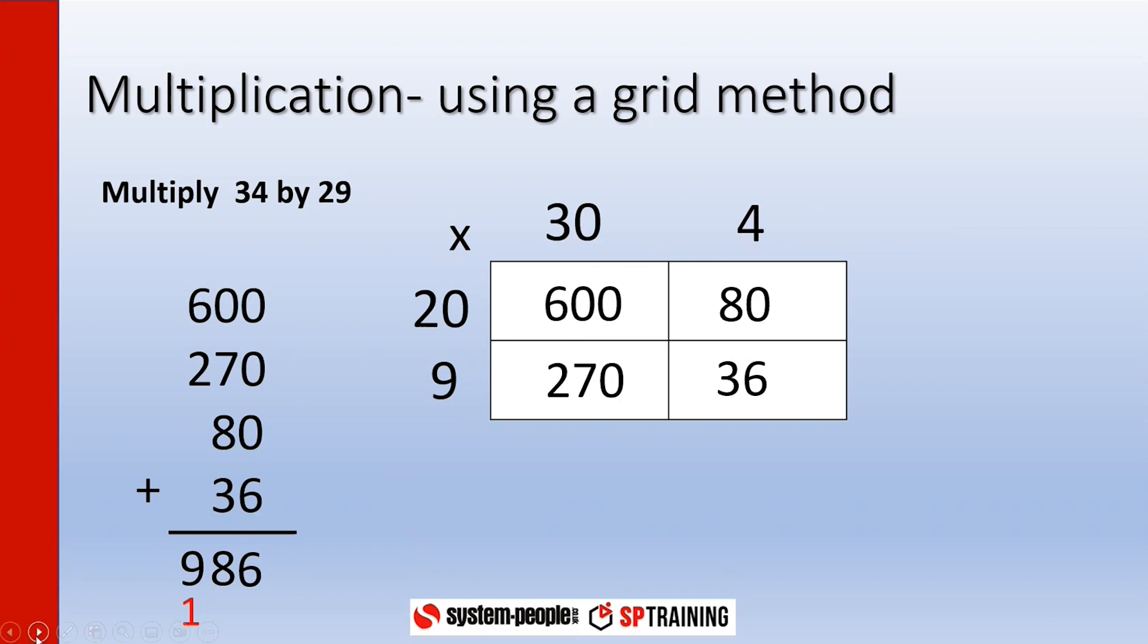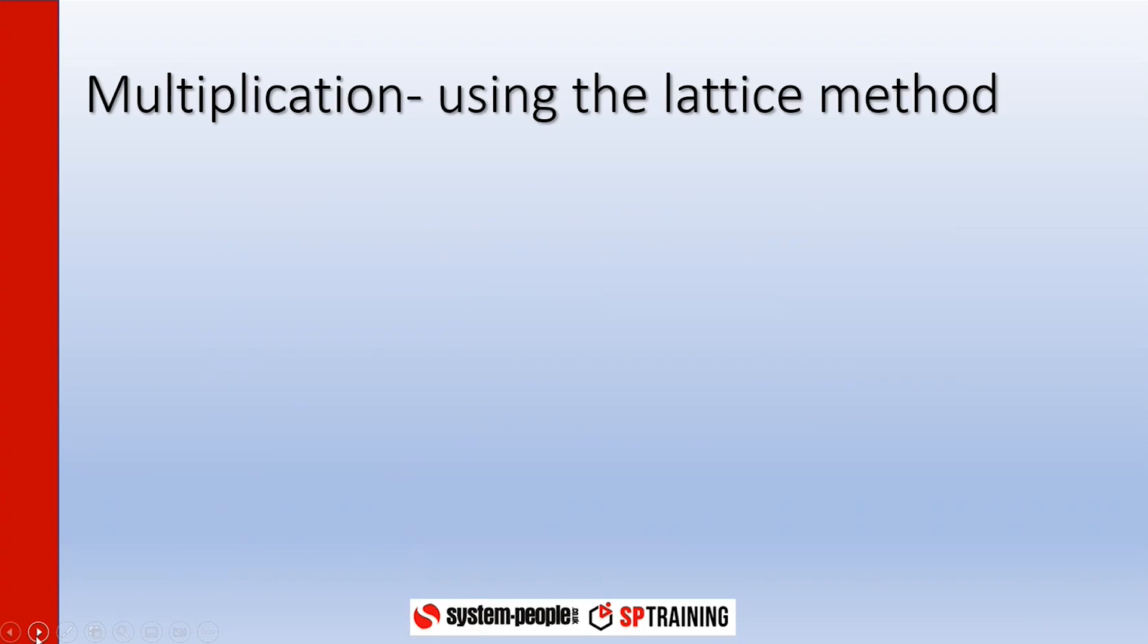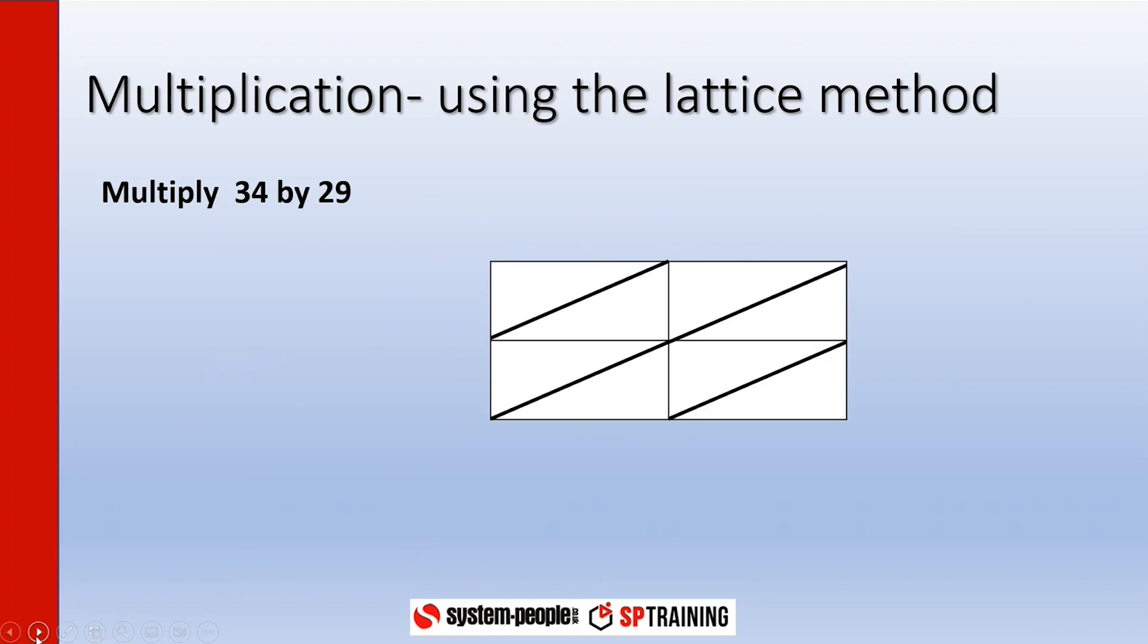Some people find that method difficult at times because you've got to deal with multiples of 10. I'm going to show you another method which is called the lattice method. And again we're going to use the same example, 34 times by 29. And we start off with a grid, but this time we split the grid diagonally, and instead of putting multiples of 10 in, we are just going to split the numbers 34 and 29.